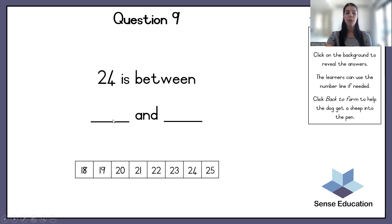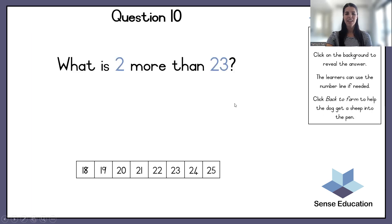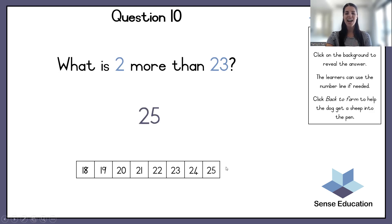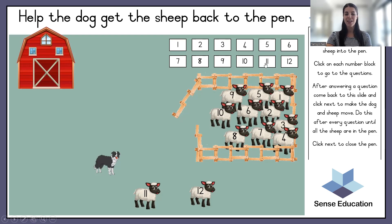Twenty-four is between what two numbers? What are the two numbers on each side of twenty-four? Number twenty-three and number twenty-five. Good. What is two more than twenty-three? Now you are going to count forwards, two hops forwards: twenty-three, twenty-four, twenty-five. Good — excellent! Tell me, how many sheep do we have left? We need to get them all into the pen. We have two sheep left.